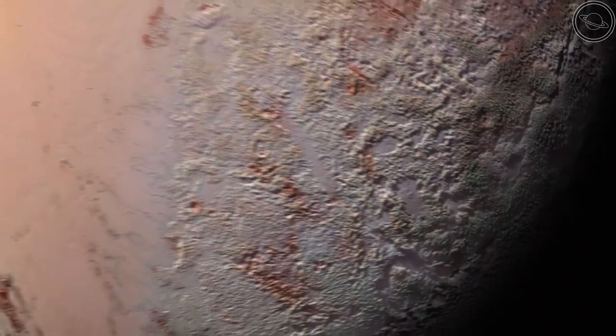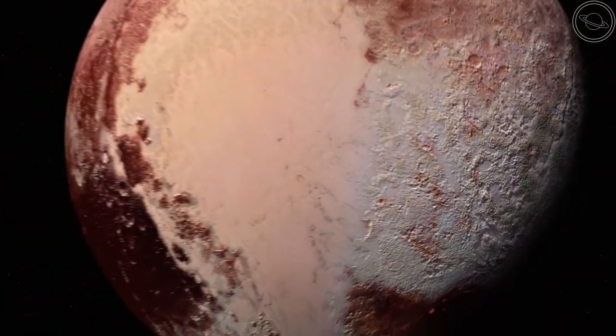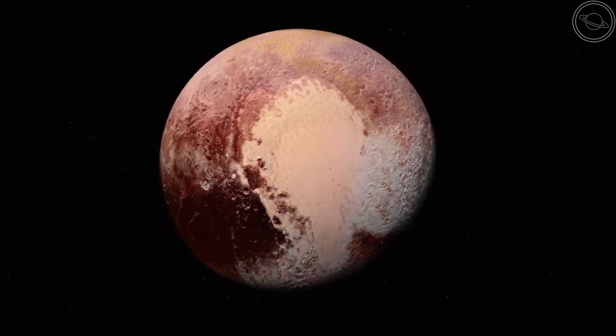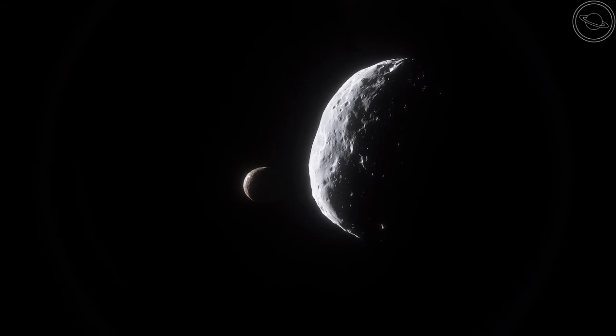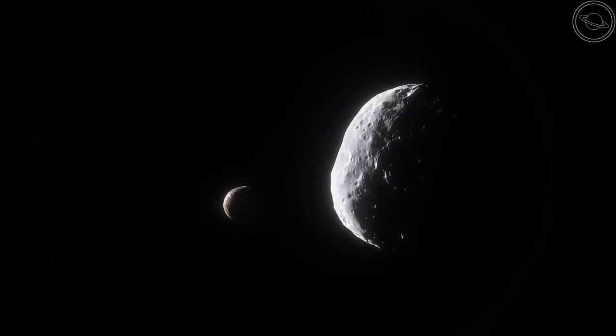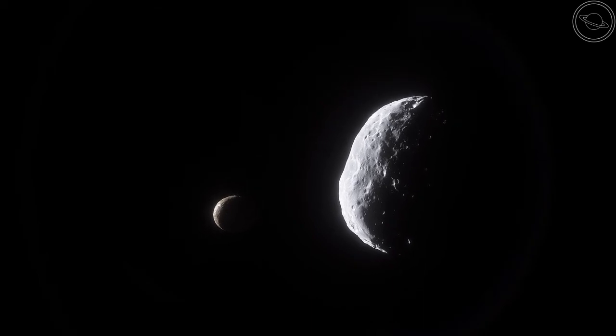If an object has not cleared its orbit of other celestial bodies, then it cannot be classified as a planet. Because all five dwarf planets today find their place in either the asteroid or Kuiper Belt, their orbits are always impeded by other asteroids and they are not able to assert gravitational dominance because of their small size.